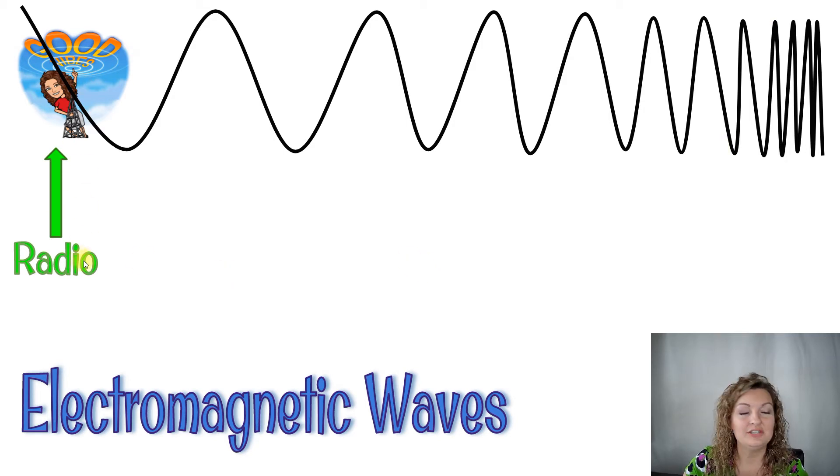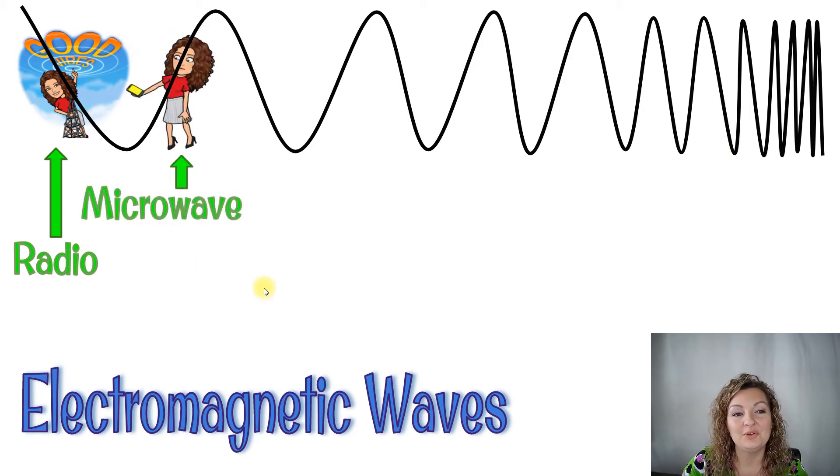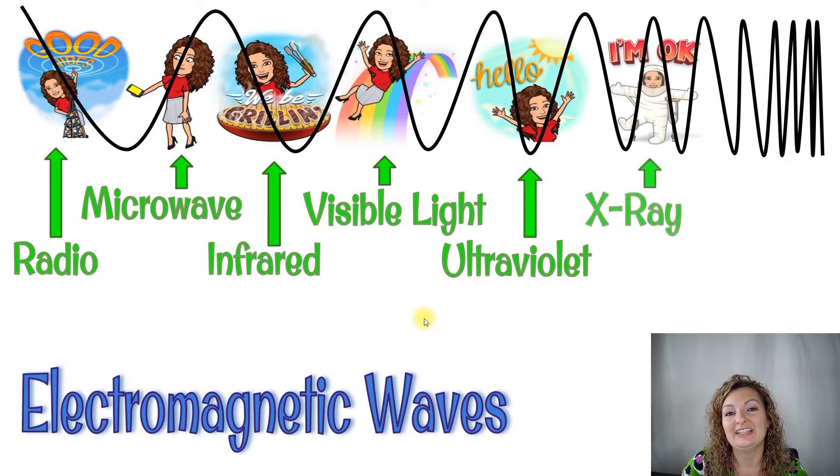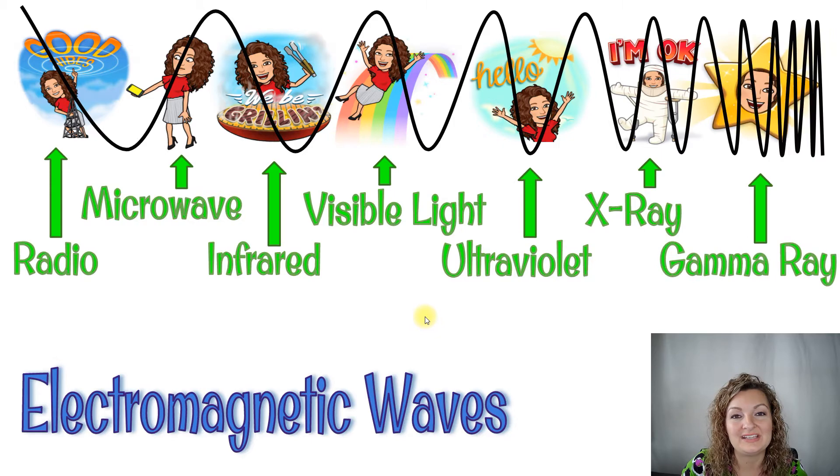So the first one is radio waves. We have microwaves, infrared waves, visible light, ultraviolet, x-ray, and gamma rays.